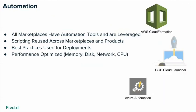The deployment on the different cloud marketplaces is completely automated using the native tools within each marketplace. AWS uses CloudFormation, Google uses Cloud Launcher, and Azure has automation. The scripts executed as part of the templates are all the same across the different vendors. Best practices are used for the deployments, and configurations are also performance-optimized — we've figured out the best configuration of memory, disk, network, and CPU based on the instance type chosen.